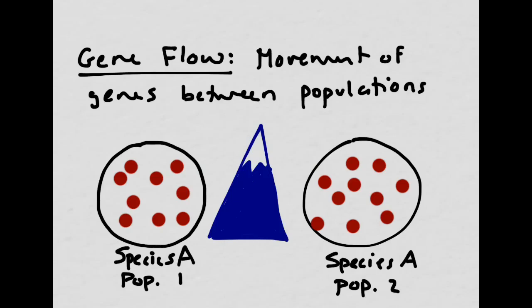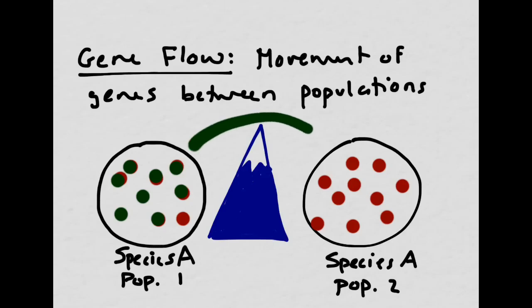Even though population 1 and population 2 start out as the same species, you might have a mutation in population 1 that causes them to look or behave differently. For example, if a mutation caused some of the red dots on the left to turn green, and that mutation caused them to blend in with the greenery and be less likely to be eaten by predators, it would become much more common — more green ones appearing and fewer red ones. Now imagine a catastrophic event like a big windstorm blew some of species A over the mountain into population 2 on the right.